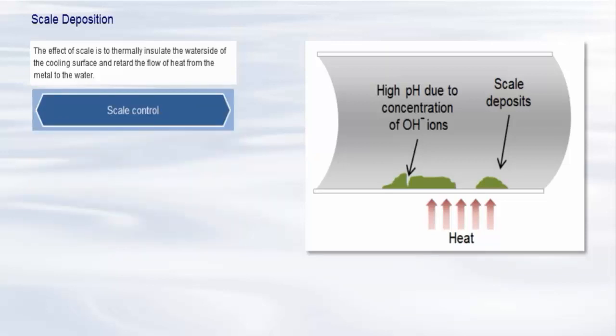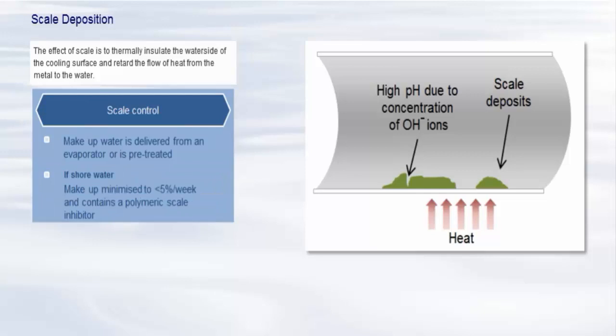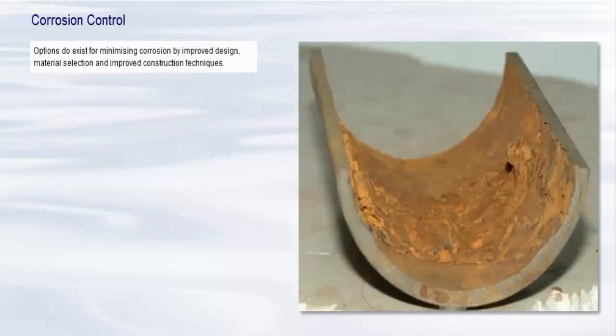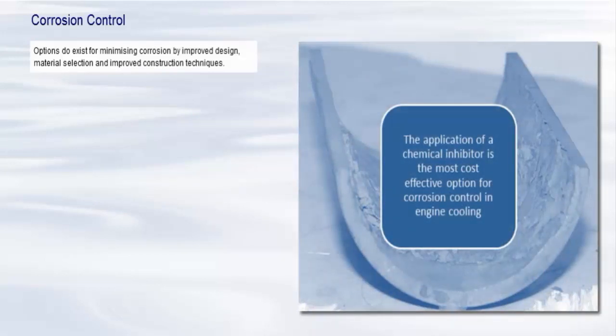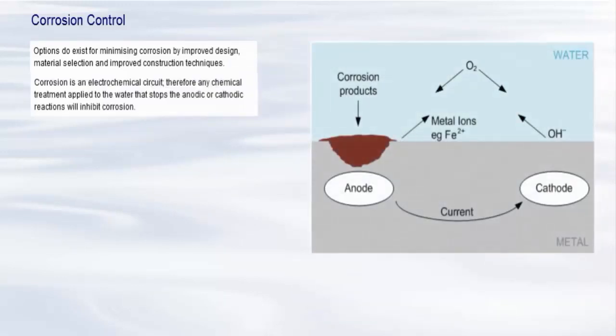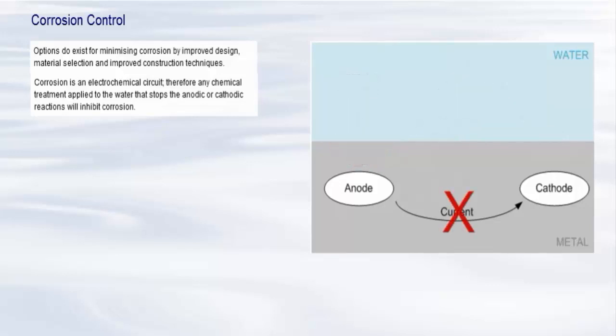The primary method of scale control for engine cooling circuits is to ensure that the makeup water is delivered from an evaporator or is suitably pre-treated to remove scale forming salts. If the system is made up with shore water then the amount of makeup should be minimised to less than 5% per week and the corrosion inhibitor selected should contain a suitable polymeric scale inhibitor to help prevent deposition. Options do exist for minimising corrosion by improved design, material selection, and improved construction techniques. Economics dictate that most systems are designed and fabricated in such a way that the application of a chemical inhibitor is the most cost-effective option for corrosion control in engine cooling. As we have seen, corrosion is an electrochemical circuit, therefore any chemical treatment applied to the water that stops the anodic or cathodic reactions will inhibit corrosion.